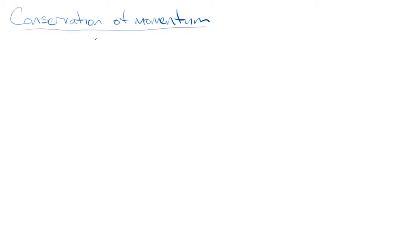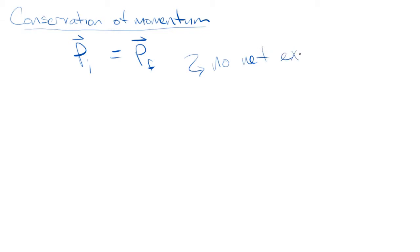Last week I wrote down this equation: pi, which is a vector, is equal to pf. When can I write that equation? What needs to apply? No net external forces acting on the system you're interested in. When we say conservation of momentum, this is what we're referring to — the initial total momentum of some system is equal to the final total momentum of some system.